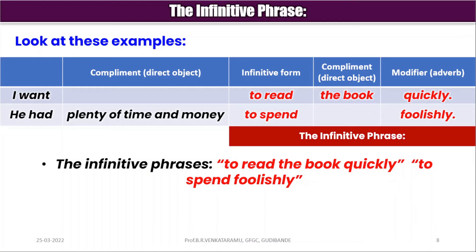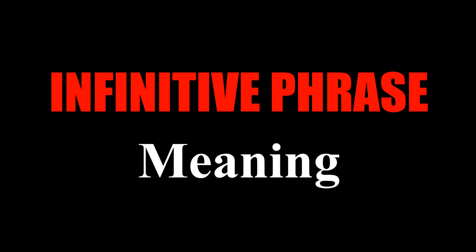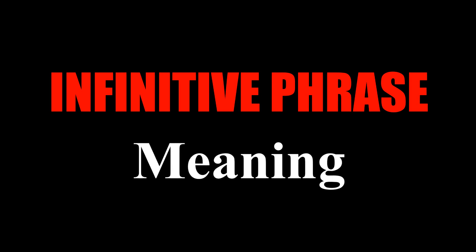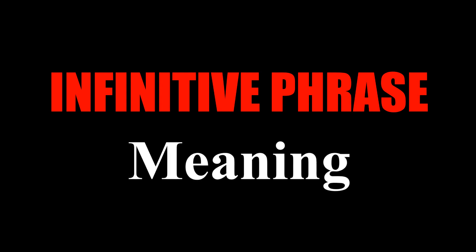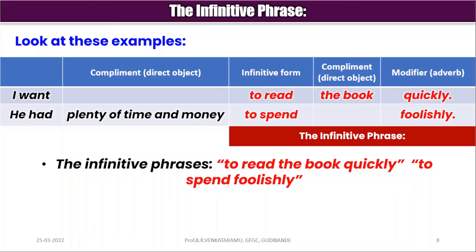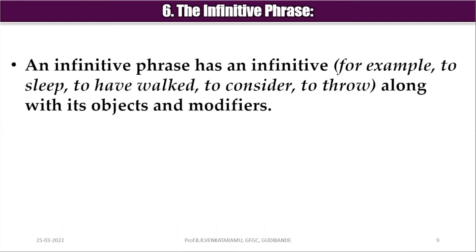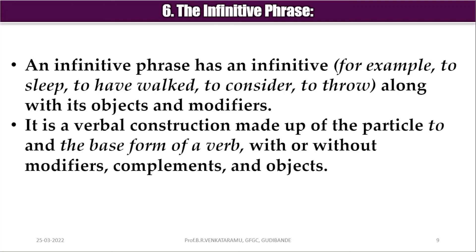You can understand that the infinitive phrase may consist of an infinitive form of the verb, the complement — it may be a direct object — or the modifier. An infinitive phrase has an infinitive, for example: to sleep, to have a walk, to consider, to throw, along with its objects and modifiers. It is a verbal construction made up of the particle 'to' and the base form of a verb, with or without modifiers, complements, and objects.